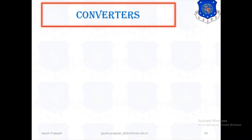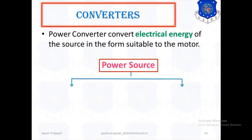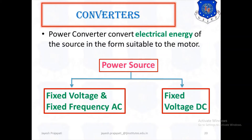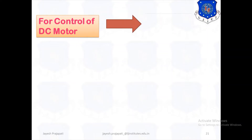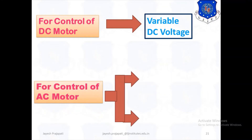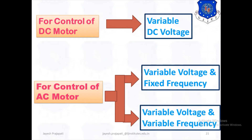A converter converts the electrical energy of the source into the form suitable for the motor. The power source may be fixed voltage fixed frequency AC or fixed voltage DC. To control a DC motor speed, we require variable DC voltage. To control an AC motor, we require either variable voltage with fixed frequency, or variable voltage with variable frequency.